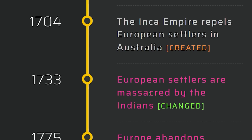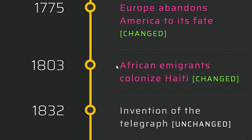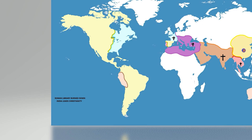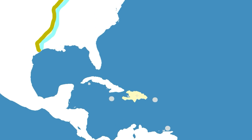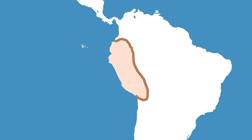European settlers are massacred by the Indians — are we talking about India or Native Americans? Europe abandons America to its fate. African immigrants colonize Haiti. Peace treaty between the united Arminian nations. Did we just ruin all of this? We have some African nations somewhere around here, probably. They have colonized Haiti, but I'm going to give them the full island itself, which makes sense because we still have the Inca in South America.